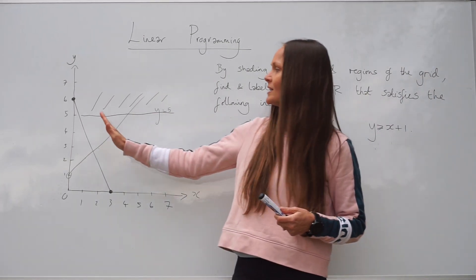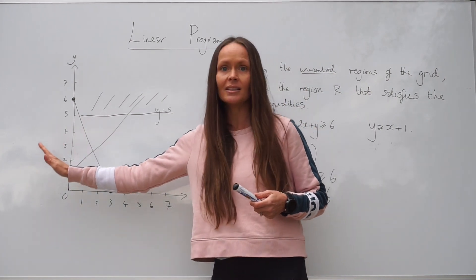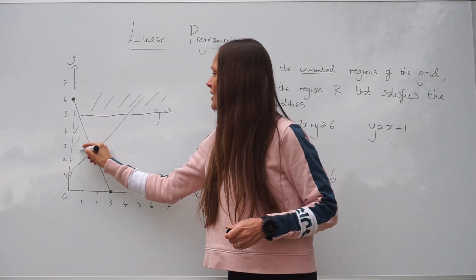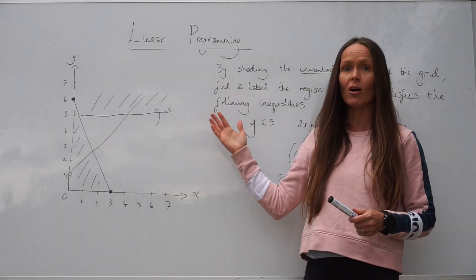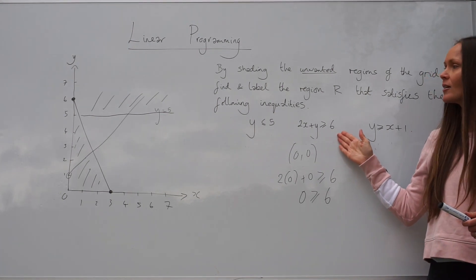So it means you would need to shade everything underneath the graph. So if we shade underneath, it just means everything above the graph does agree with the inequality given.